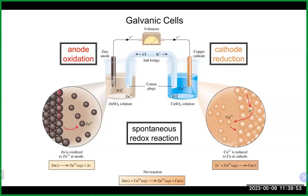This is an example of a galvanic cell you could build in the laboratory. There are several components. The side shown here is referred to as the anode side, where oxidation occurs. On the anode side, just like the cathode side, you typically have a solid electrode, and whatever that solid electrode is, you typically have that ion floating around in solution — for example, zinc sulfate or zinc nitrate.